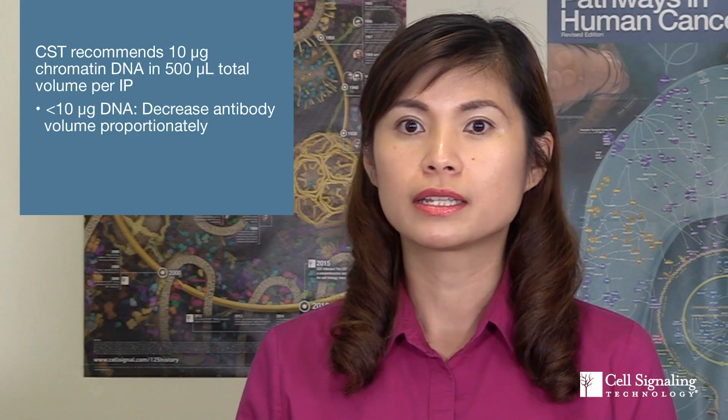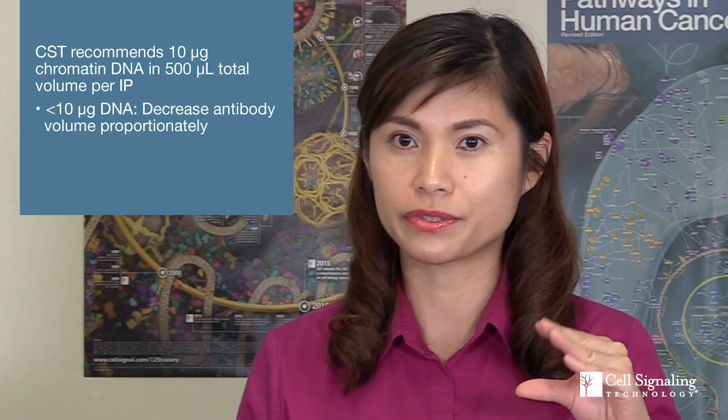It's very important to maintain the ratio of antibody volume to the amount of chromatin, rather than the ratio of antibody volume to the IP volume. For example, CST recommends using 10 micrograms of chromatin DNA per IP. However, if less than 10 micrograms of chromatin DNA is used, then the antibody amount should be decreased proportionally.